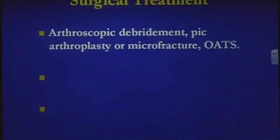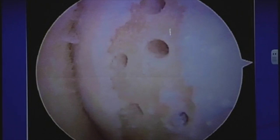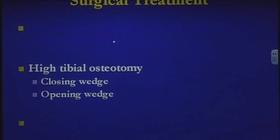OATS — osteoarticular transfer system — is for very isolated defects. We take a dowel of cartilage and bone from a non-weight-bearing portion of your knee and transfer it into the defect. These are only for small, isolated defects. Here's an example of a patient with an arthritic lesion on the thigh bone portion where I drilled these holes — the microfracture technique — hoping the cells grow out and cover the defect area.